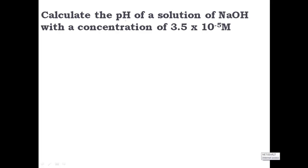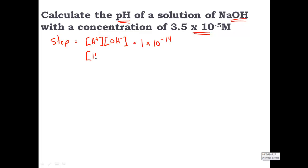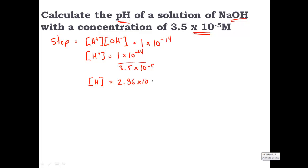In this example, we're asked to calculate the pH of a solution of NaOH with a concentration of 3.5×10⁻⁵ molar. Step 1: use the formula [H⁺] × [OH⁻] = 1×10⁻¹⁴. Rearranging, H⁺ equals 1×10⁻¹⁴ divided by the hydroxide concentration of 3.5×10⁻⁵. Solving, the hydrogen ion concentration is 2.86×10⁻¹⁰.